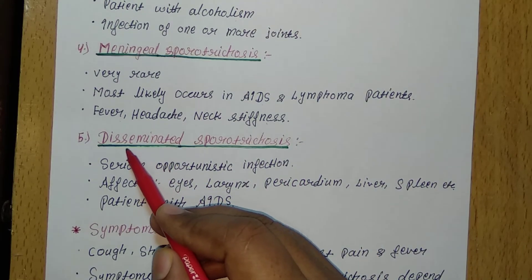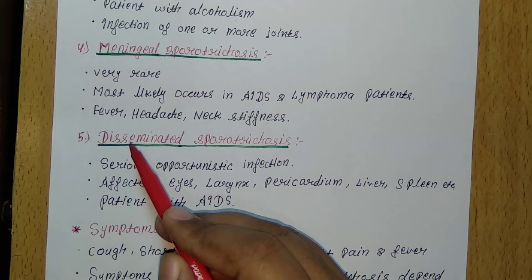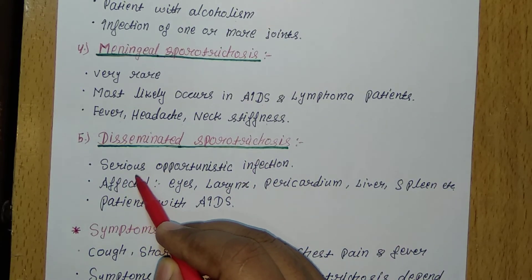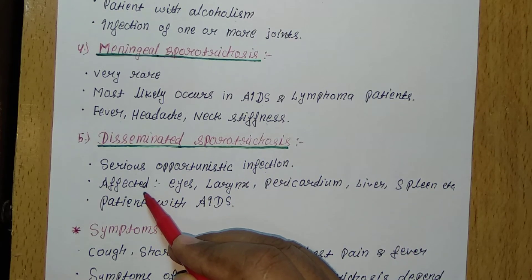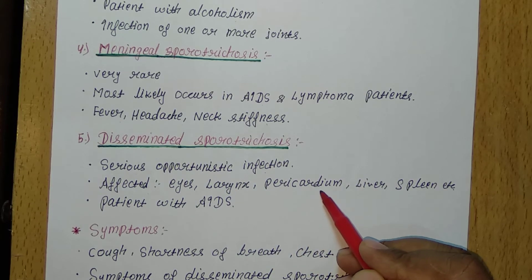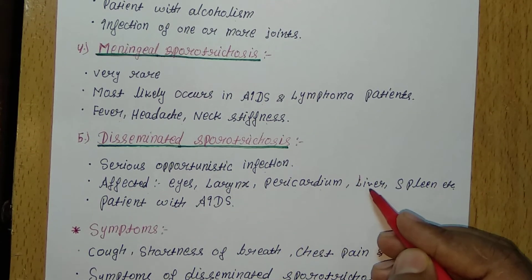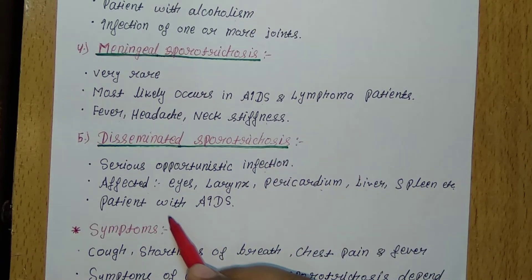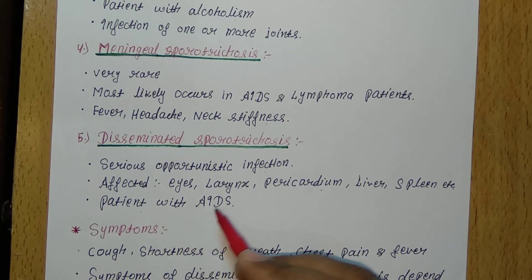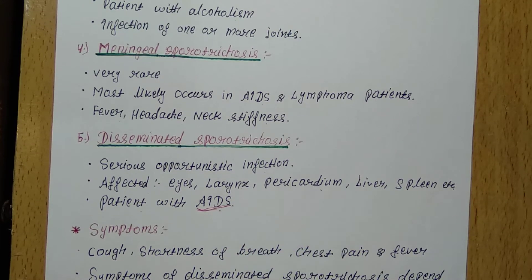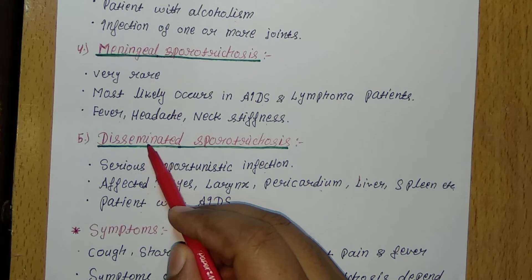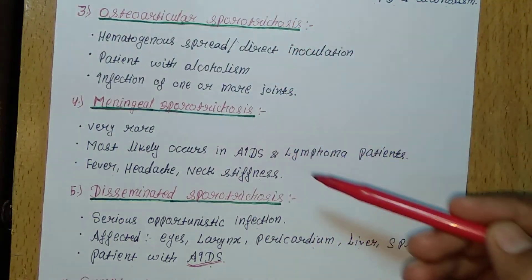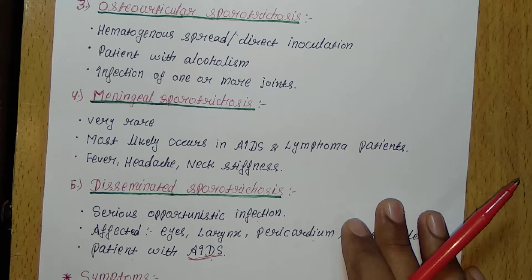The fifth and last subtype is disseminated Sporotrichosis. Disseminated Sporotrichosis is a serious opportunistic infection that affects the eyes, larynx, pericardium, liver, spleen, and other organs. It mostly affects patients with AIDS.